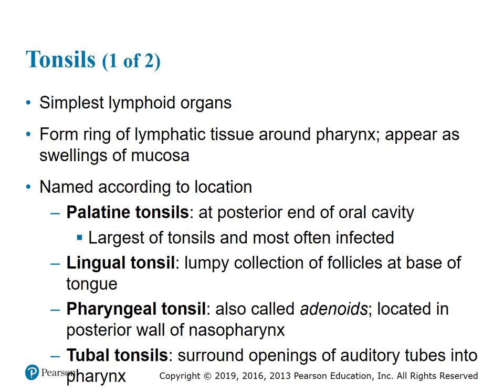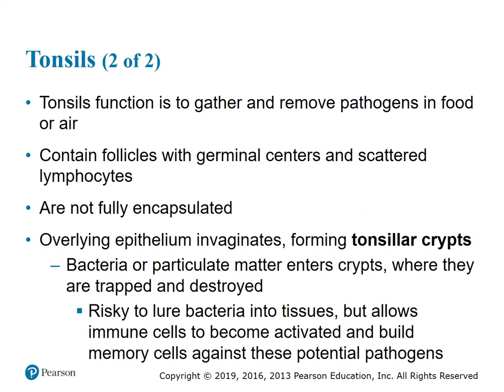The tonsils are the simplest lymphoid organs. They form a ring of lymphatic tissue around the pharynx and appear as swellings of mucosa. They are named according to their location: the palatine tonsils are at the posterior end of the oral cavity — the largest of tonsils and most often the ones that are infected; the lingual tonsil is a lumpy collection of follicles at the base of the tongue; the pharyngeal tonsil, also called adenoids, is located in the posterior wall of the nasopharynx; and the tubal tonsils surround the openings of the auditory tubes into the pharynx. The tonsils' function is to gather and remove pathogens in food or air. They contain follicles with germinal centers and scattered lymphocytes, and are not fully encapsulated. The overlying epithelium invaginates, forming tonsillar crypts where bacteria or particulate matter enters and is trapped and destroyed.